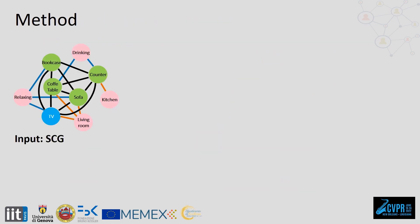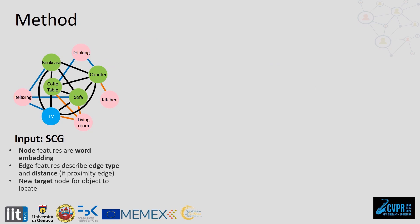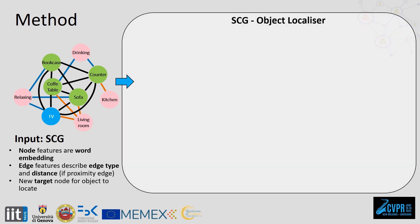We use the Spatial Common Sense Graph as input to our localization approach. The node features are word embeddings describing the object class or the concept, and the edge features represent the edge type and the distance if the edge is a proximity edge. For the localization, we insert a new target node with the class of the object we want to locate, and connect it to other object nodes with proximity edges with distances set to unknown. Our method is called STG Object Localizer and is composed of two main modules.